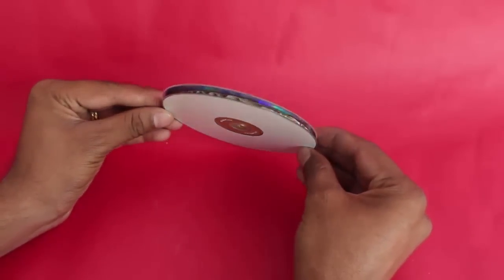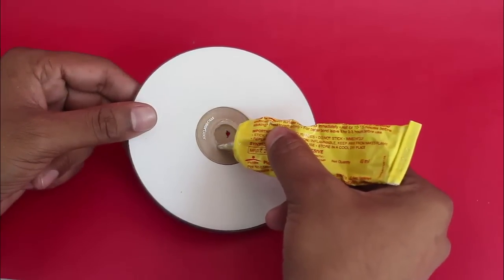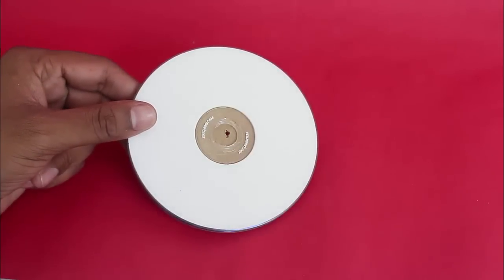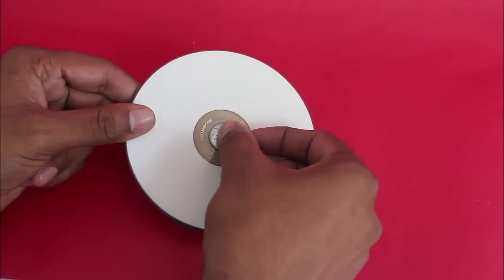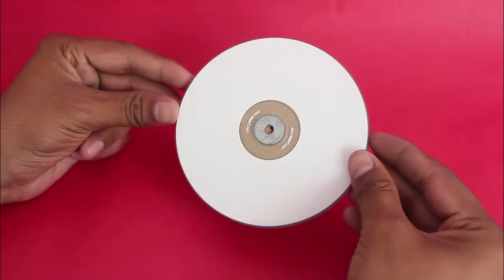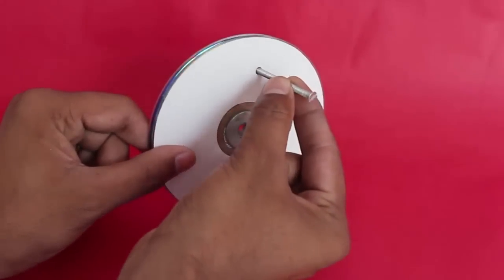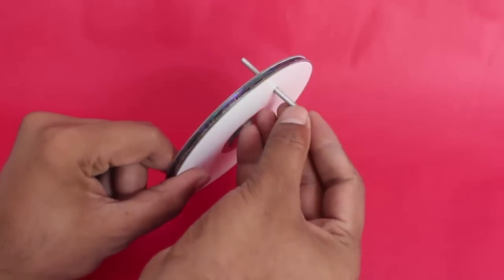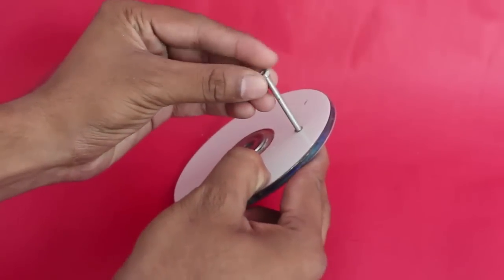Then stick steel washers on both the DVDs as shown. Then make a midway hole in the DVDs and fix a long screw with a nut for the pulley handle. This is the handle.